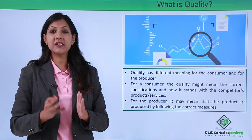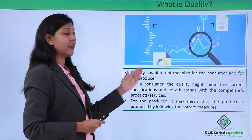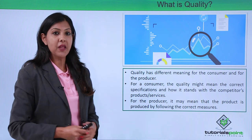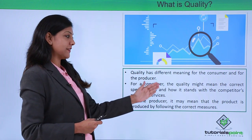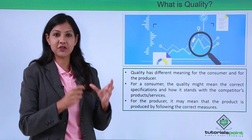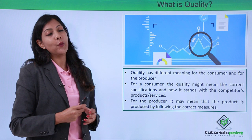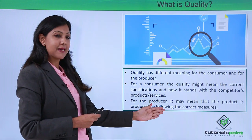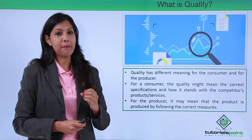What is quality and how is it different from Six Sigma? Quality has a different meaning for the consumer and the producer. From a consumer point of view, quality is more about how a product stands against its competition and what is the brand value. From a producer point of view, it may mean that the product is produced by following the correct measures.